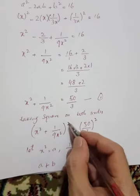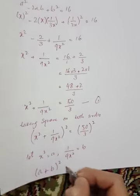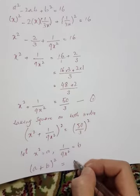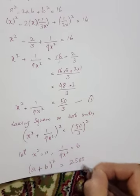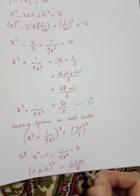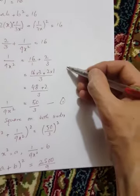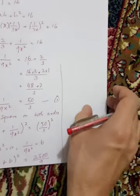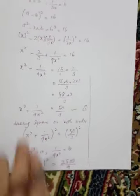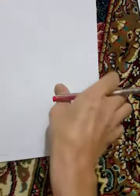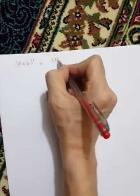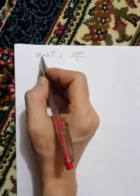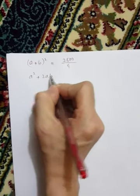x squared plus one over nine x squared, the whole thing squared, equals fifty over three squared. Square gives us fifty squared which is twenty-five hundred, and three squared is nine, so twenty-five hundred over nine. Now we open the formula a plus b whole squared, which is a squared plus two ab plus b squared.